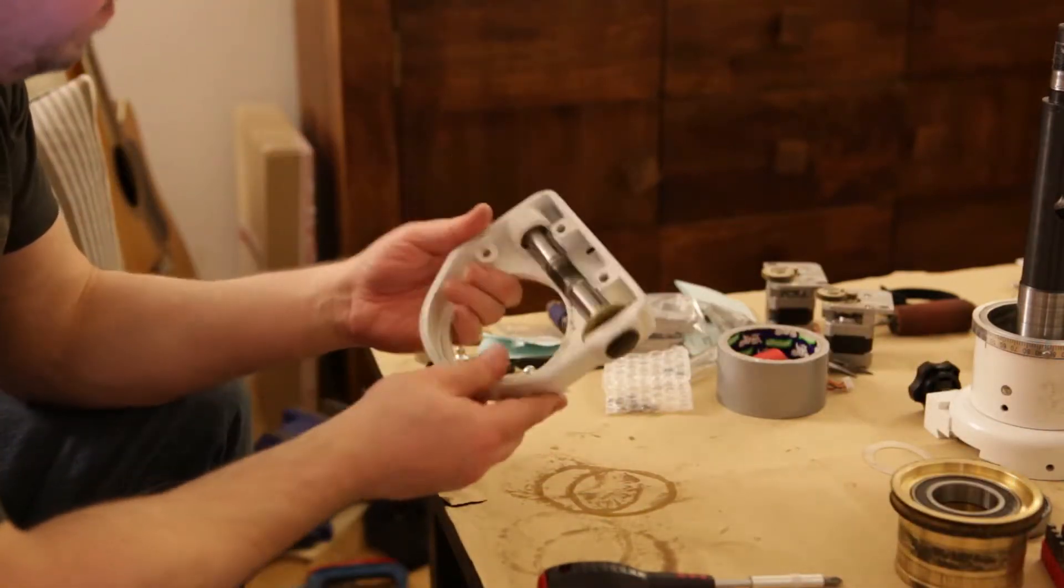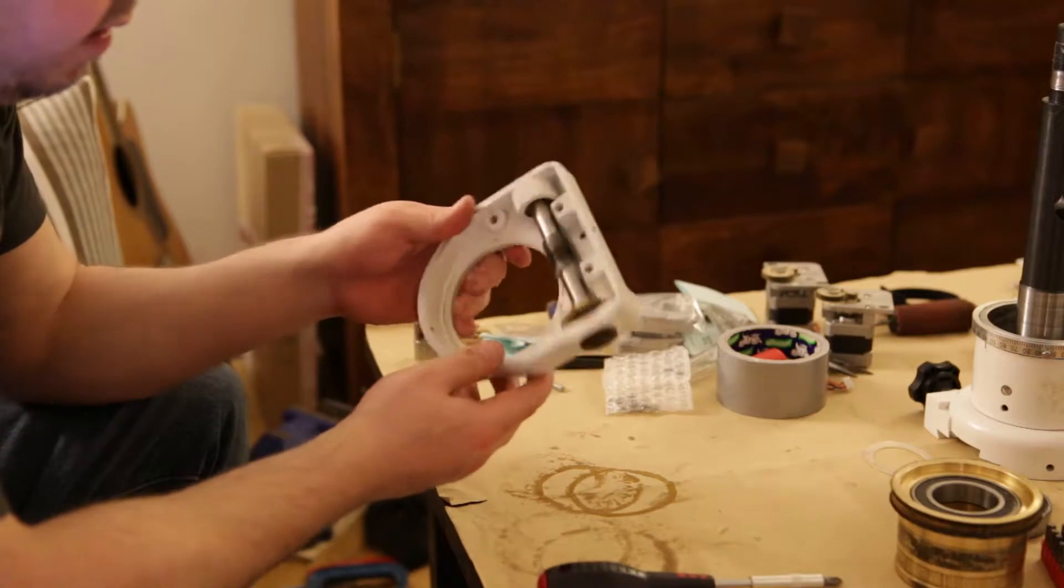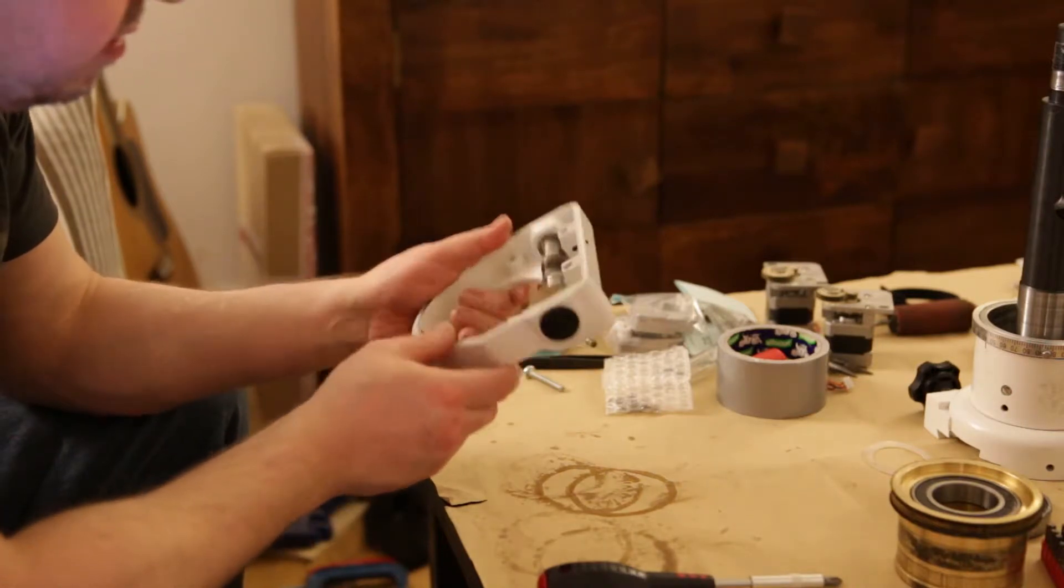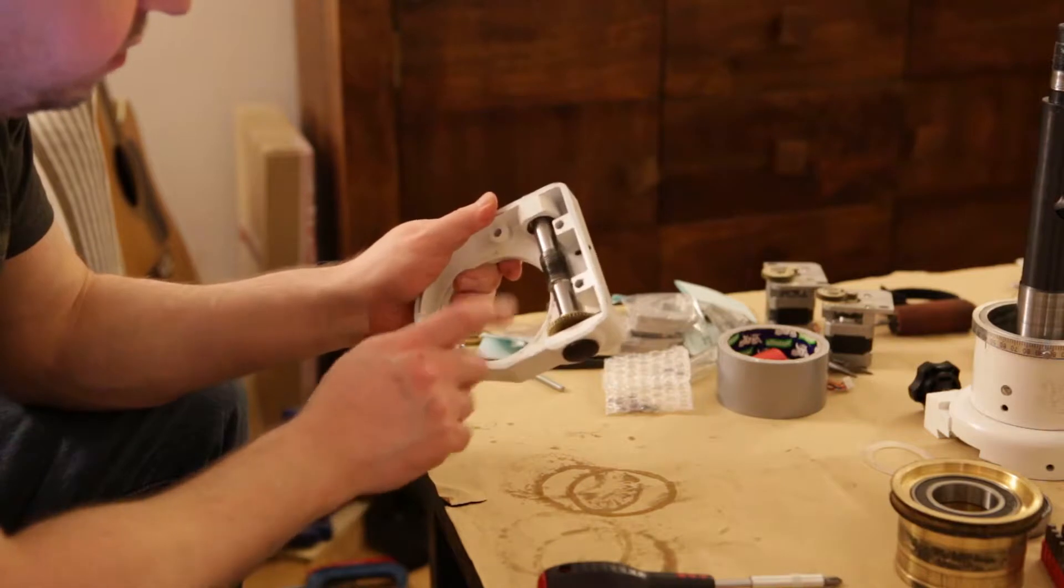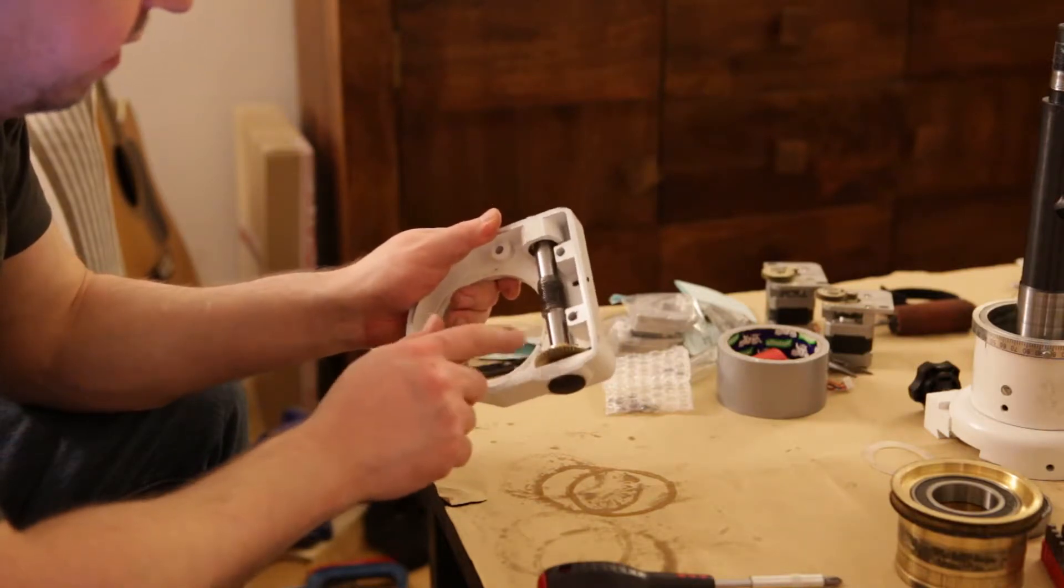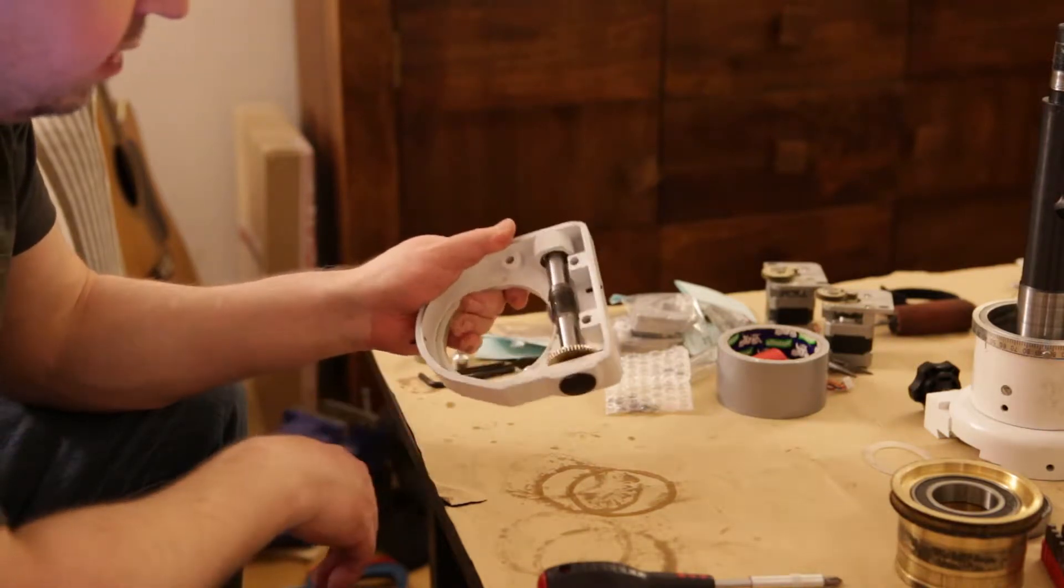And this looks pretty much the same as the RA axis assembly. So the idea again is to take this gear off and replace it with a timing pulley.